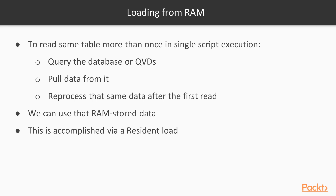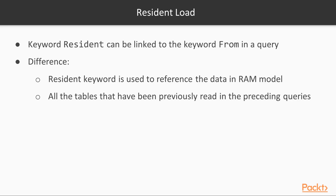In some cases, we will need to read the same table more than once in a single script execution. This means querying the database or QVDs and pulling data from it, then reprocessing that same data after the first read in order to make it adequate for our data model. Since the data is being stored in RAM after each query during the script execution, we can use that RAM-stored data instead of going directly to the original data source. This is accomplished via a resident load. The keyword resident can be likened to the keyword from in a query. The difference is that the resident keyword is used to reference the data in the RAM model — that is, all the tables that have been previously read in the preceding queries of the same script.